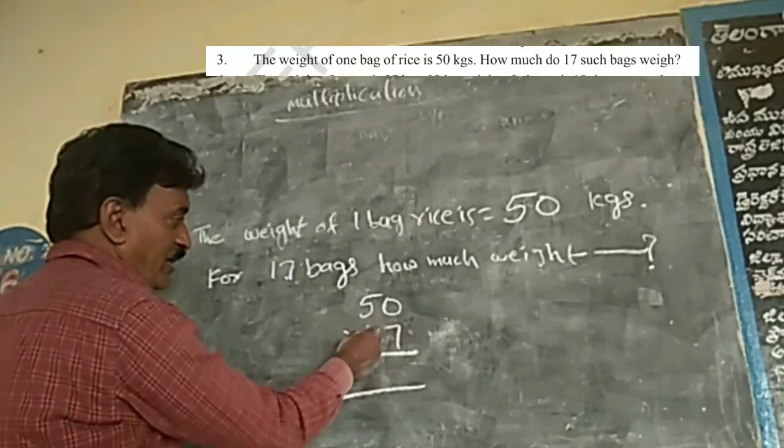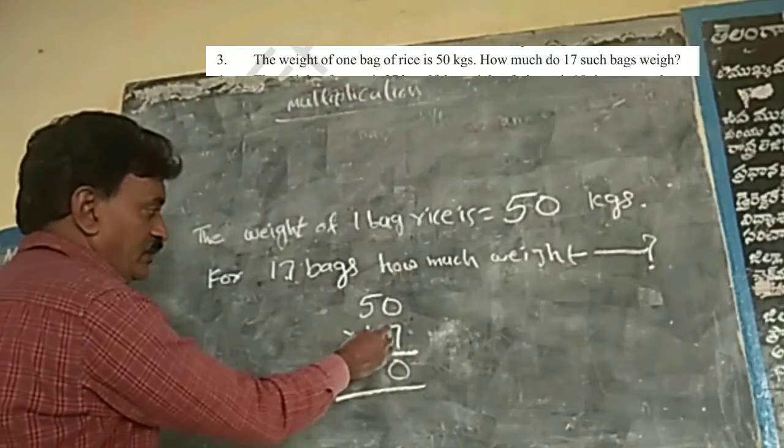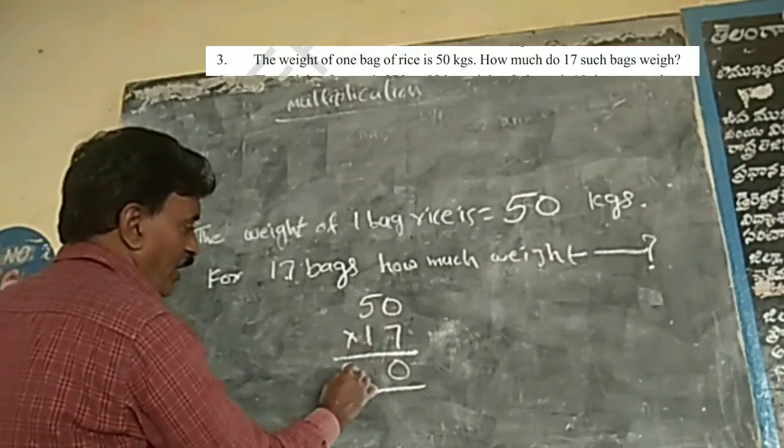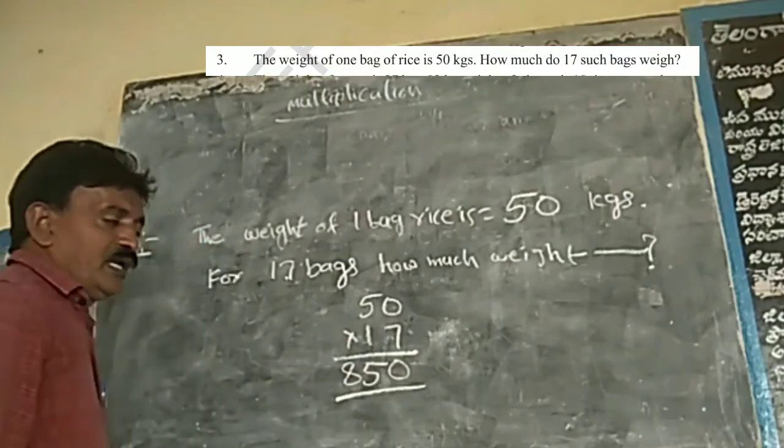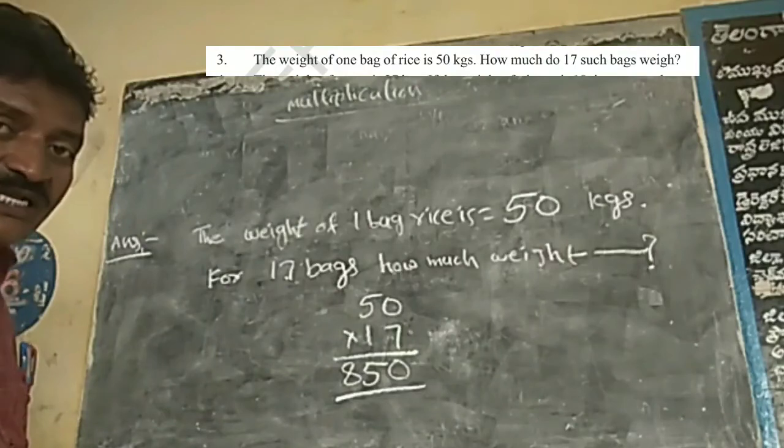So you can multiply. 17, 0, 0. 17 table, this is. 17, 0, 0. 17, 5 are 85. In 17 bags, there are 850 kgs rice.